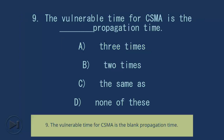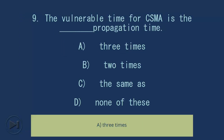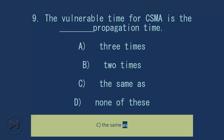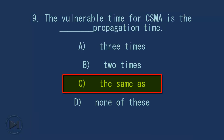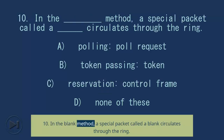Question 9: The vulnerable time for CSMA is blank the propagation time. A) Three times, B) Two times, C) The same as, D) None of these. Answer: C) The same as.